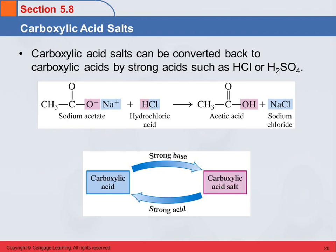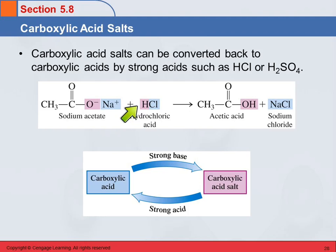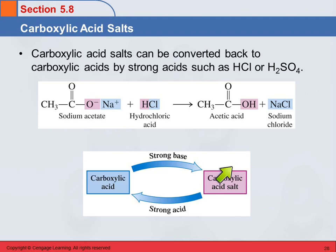We can make carboxylic acid salts by reacting a carboxylic acid with a base. And we can turn the salt back into the carboxylic acid by reacting it with a strong acid, which puts the hydrogen back on and produces sodium chloride as the other product. This shows that the reaction is reversible — carboxylic acid plus strong base gives the salt, and the salt plus strong acid gives the acid back.